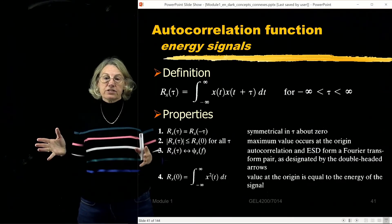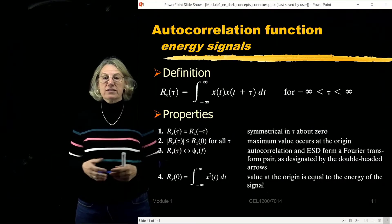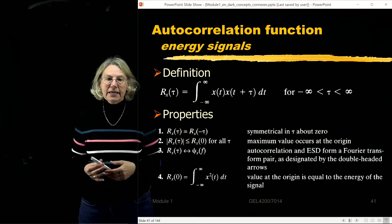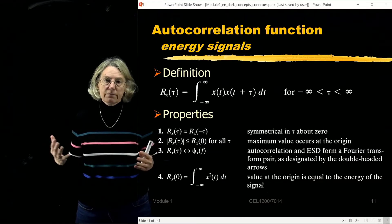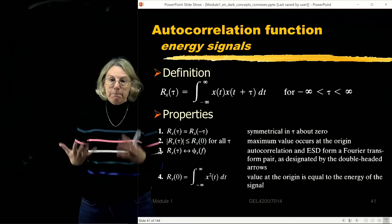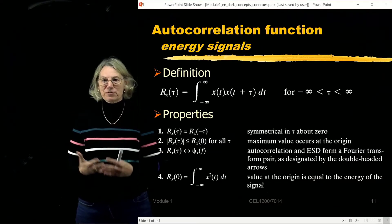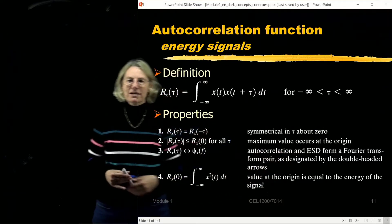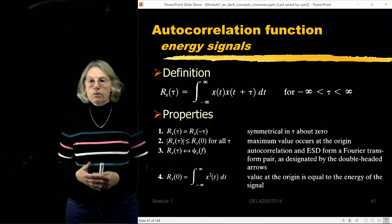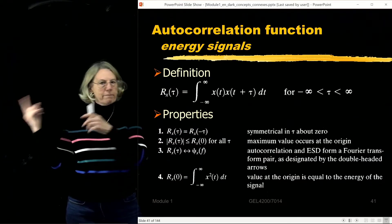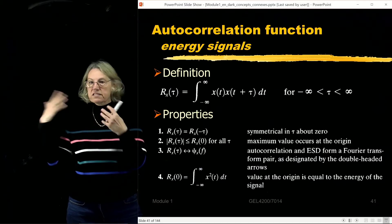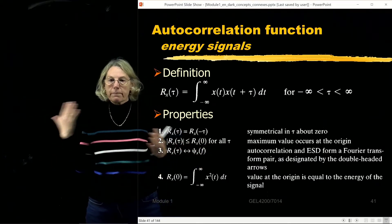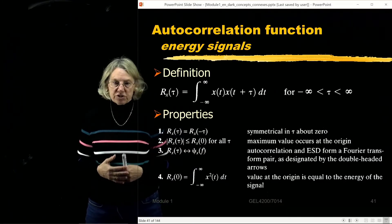Next, I take the Fourier transform of the autocorrelation function. It's like a function of time — I call it tau — and its Fourier transform is given a name: the energy spectral density (ESD). By definition, the ESD is the Fourier transform pair of the autocorrelation function. This goes right back to Parseval's theorem.